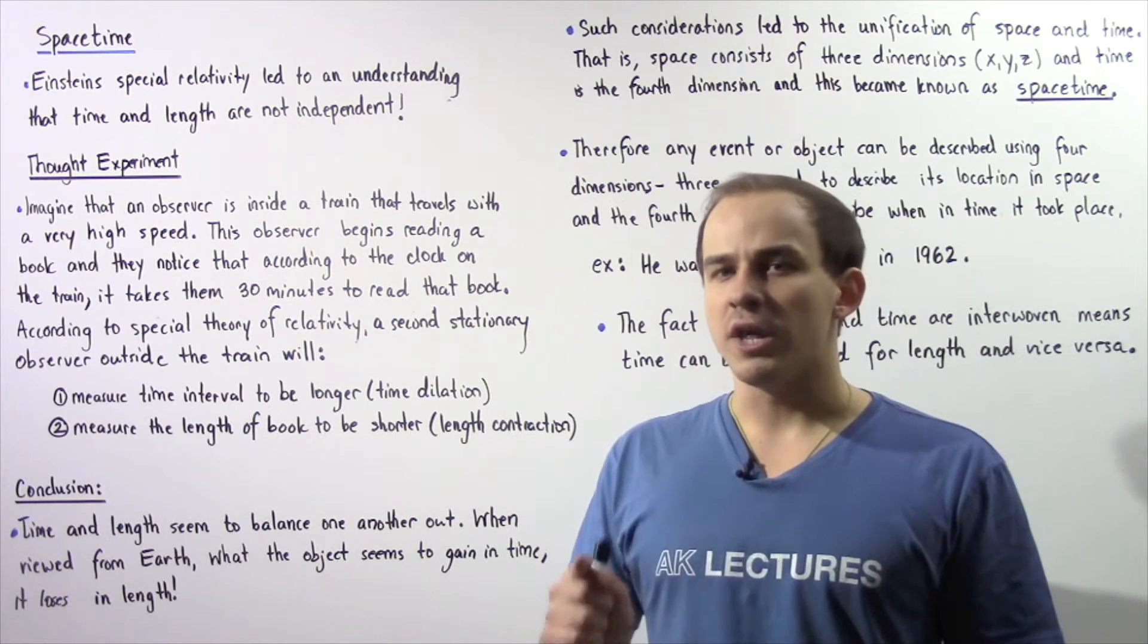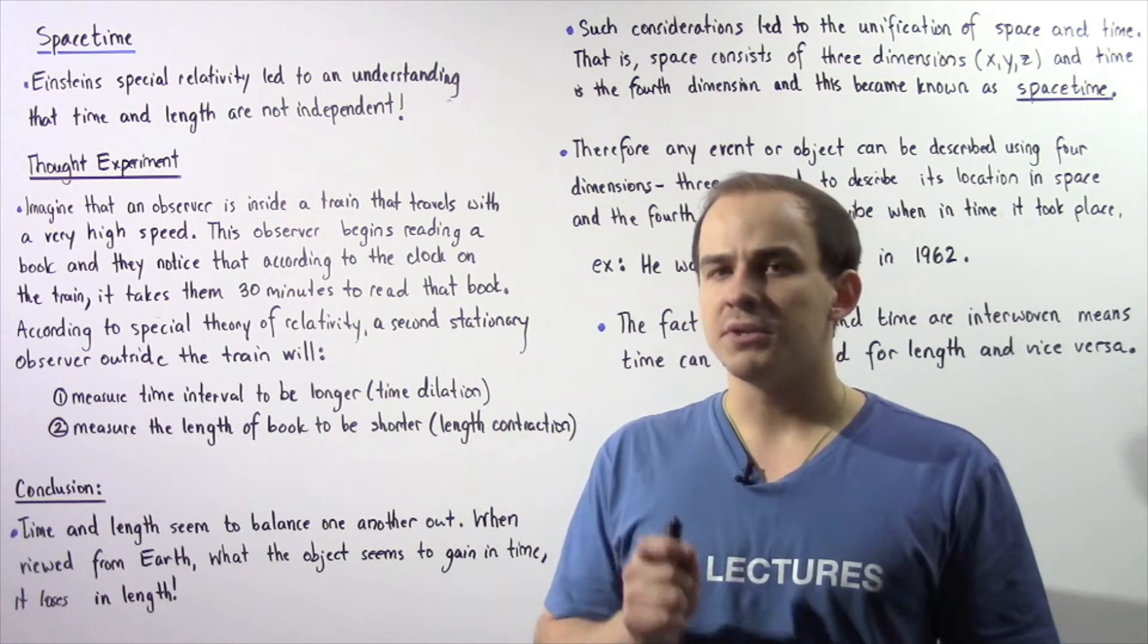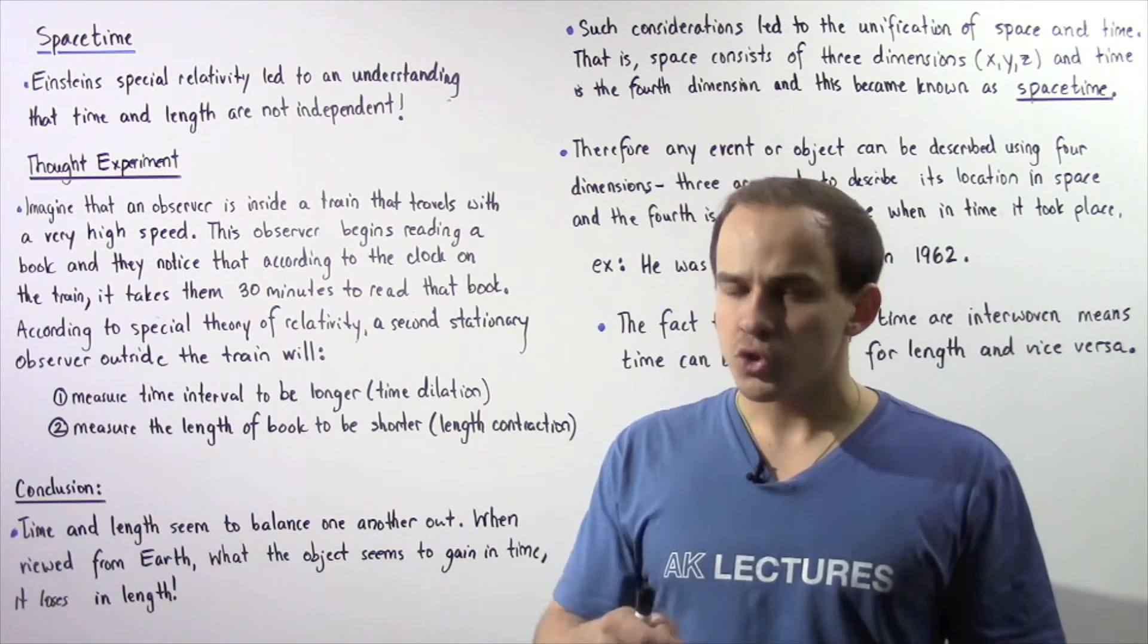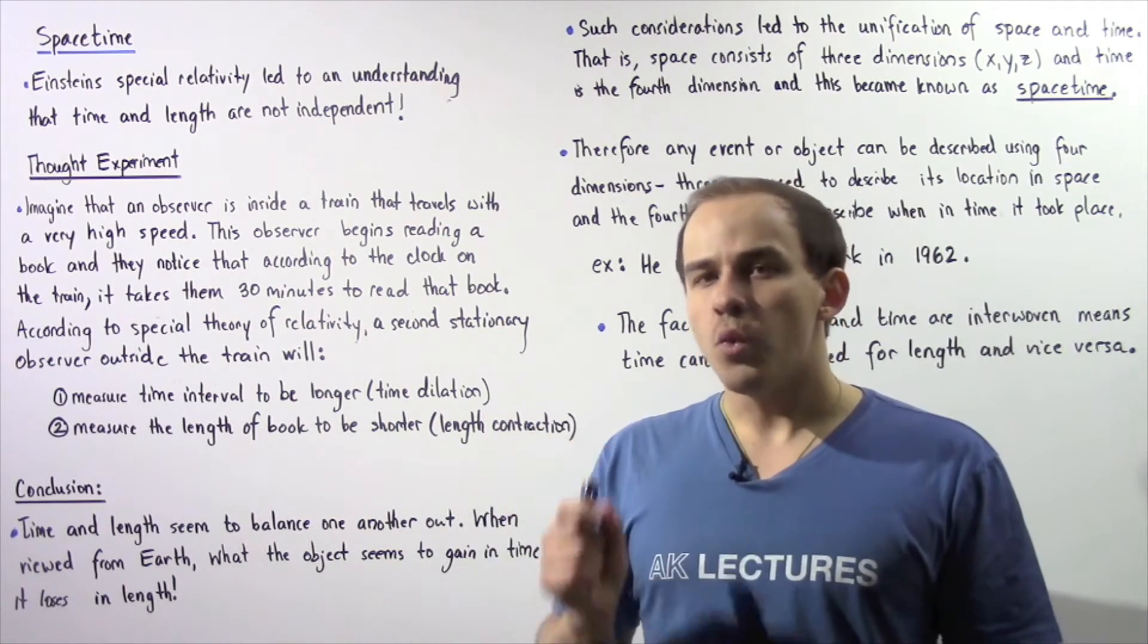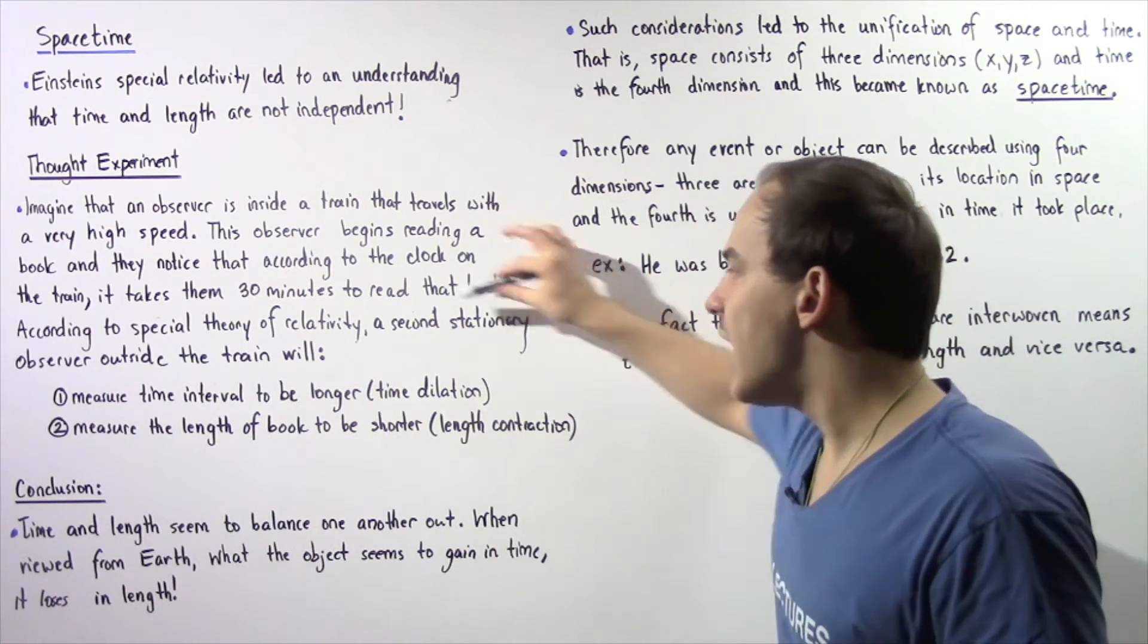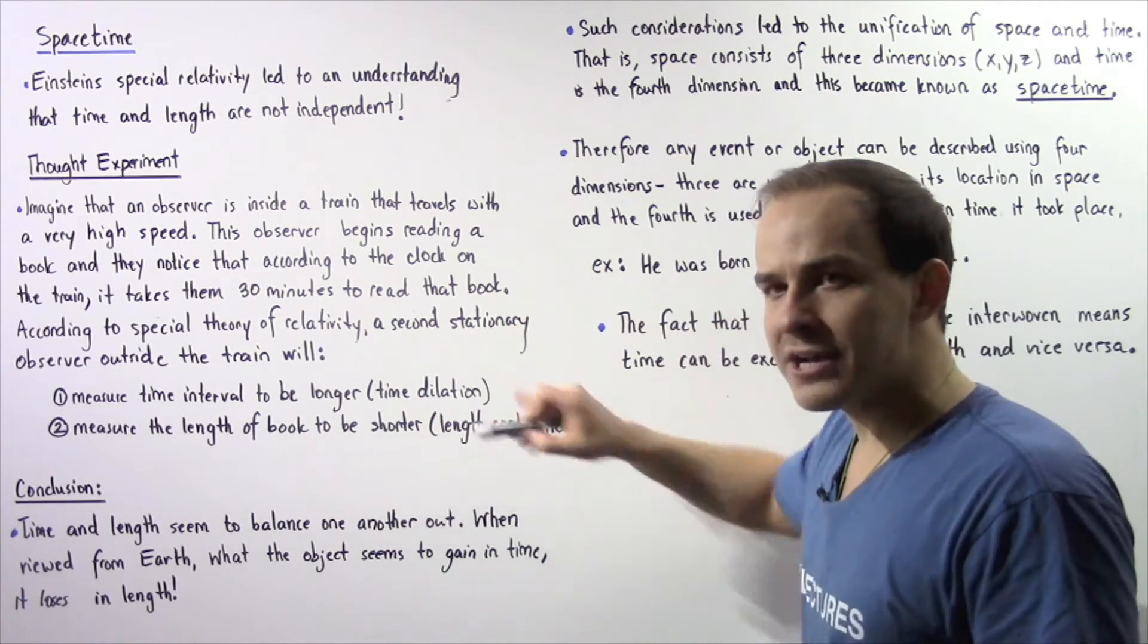Based on the special theory of relativity as proposed by Albert Einstein, a second observer outside the train found on Earth will basically experience two things: time dilation and length contraction.